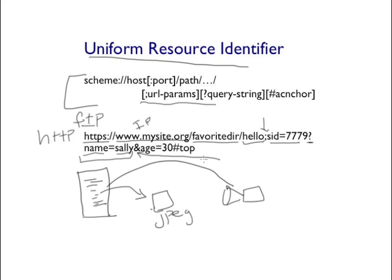Here we have two name-value pairs. The last optional component is the anchor, which represents the position within the document — essentially telling the browser to focus on a specific section of the page, such as the top section.